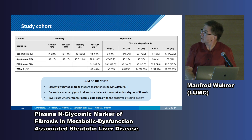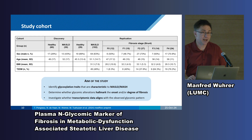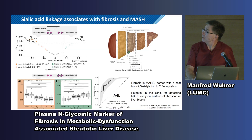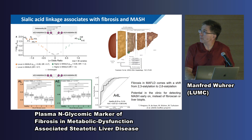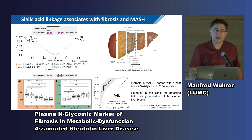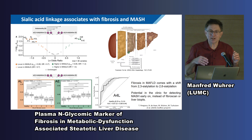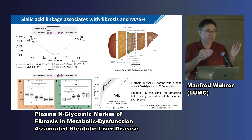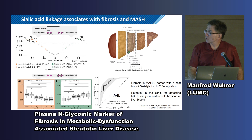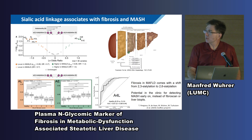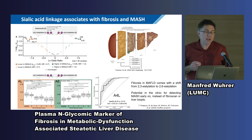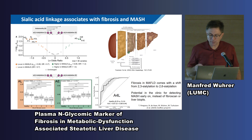We have all these fibrosis stages and we asked whether our signature picks up this fibrosis. In the volcano plot, some glycans go down with fibrosis and others go up. The L indicates 2,3-linked sialic acid going down, and the E indicates 2,6-linked sialic acid going up. All we see is not a complex change — really just one thing: 2,3-linked sialic acid is going down, 2,6 is going up. All pre-fibrotic stages have high 2,3-linked sialic acid, and once fibrosis starts at stage 1, it goes down while 2,6 goes up — a very homogeneous signature reflecting fibrosis.